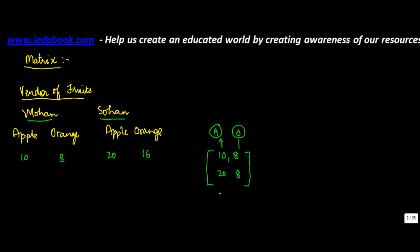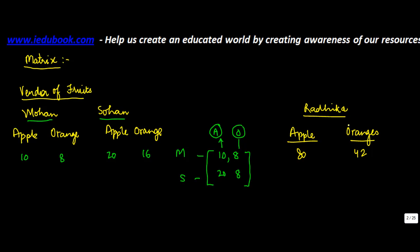Here, the first line represents Mohan and the second line represents Sohan. Now a third person, Radhika, also sells apples and oranges — she has 80 apples and 42 oranges. If you have to mention this, you extend the brackets further and write 80 in the apple column and 42 in the orange column. This tabular or rectangular representation is known as a matrix.